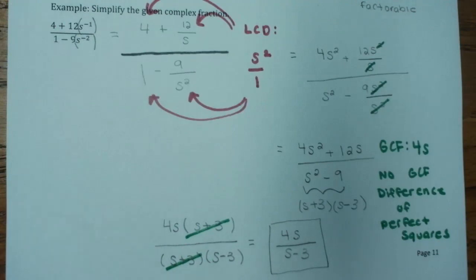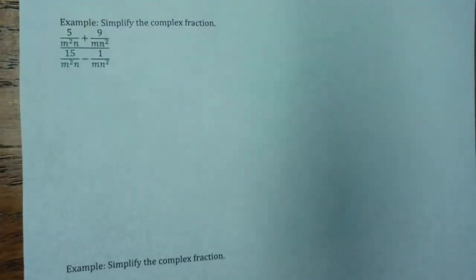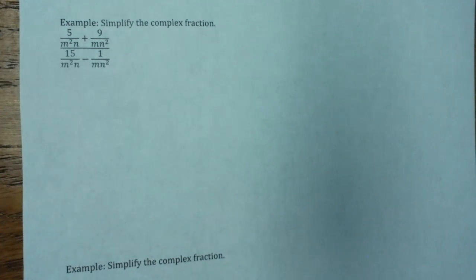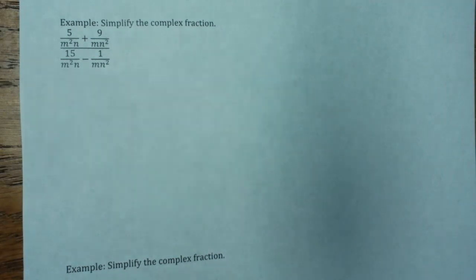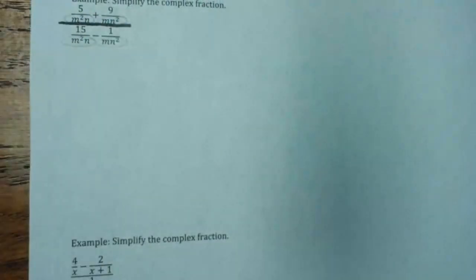Last page for this section. Simplify the complex fraction: 5 over m squared n, plus 9 over m n squared, all over 15 over m squared n, minus 1 over m n squared. These are separate fractions, so I can't do keep, change, flip. Let's multiply everything by our LCD. Our denominators are m squared n, m n squared, m squared n, and m n squared. They all need two m's and two n's, so our LCD is m squared n squared.